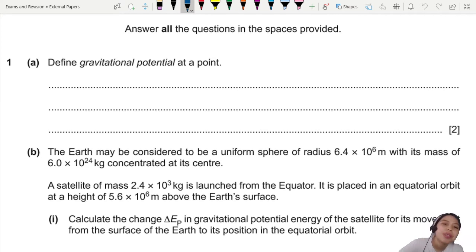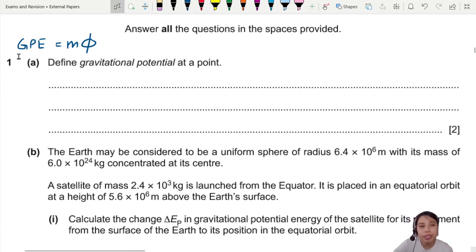But how do we define it though? You gotta think of it as the gravitational potential is equal to... Oh, I should write it the other way. M phi equals to GPE. This will probably help you memorize a little bit. GPE is gravitational potential energy equals to M times phi. But you want to define it as in terms of energy per mass. So phi equals to GPE per mass.